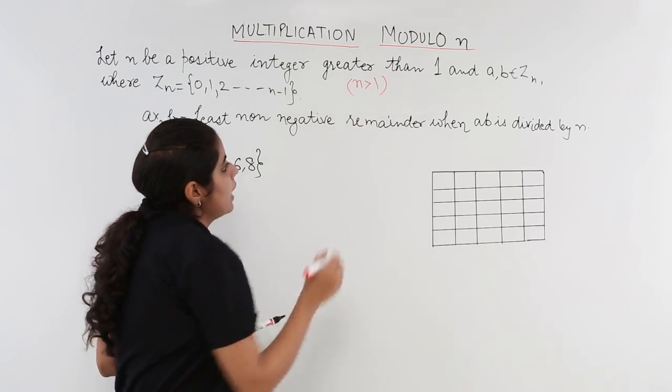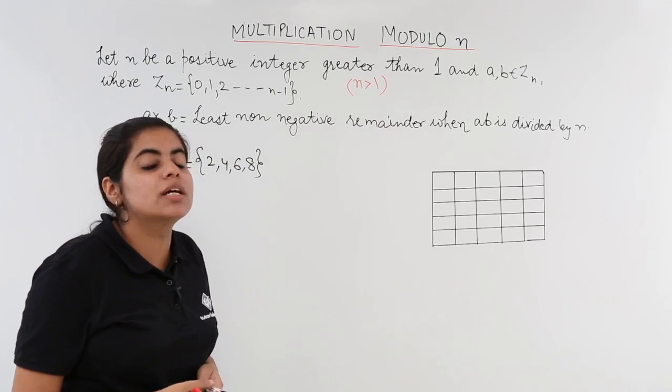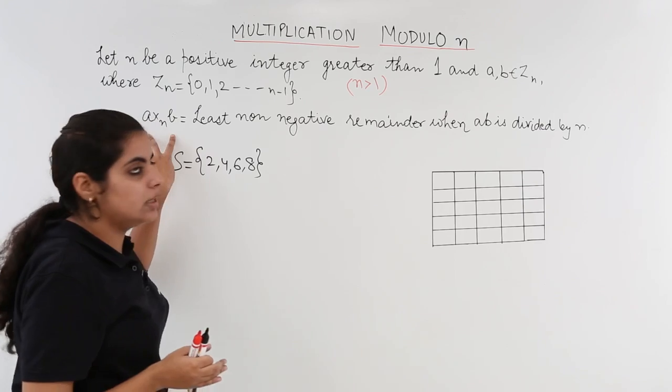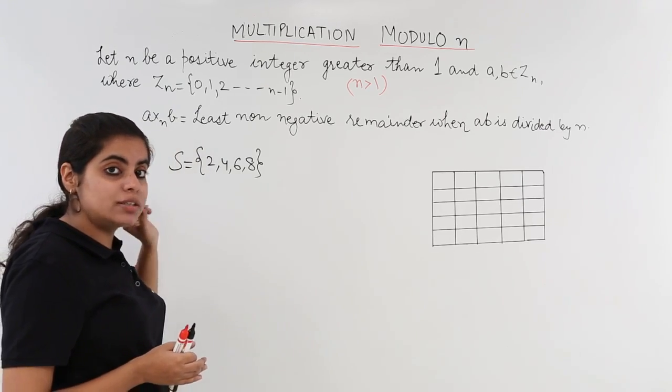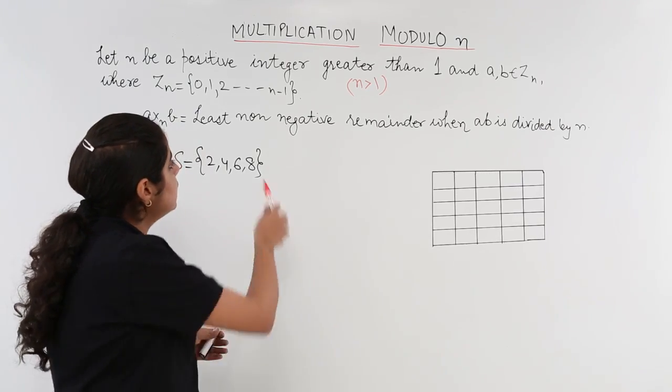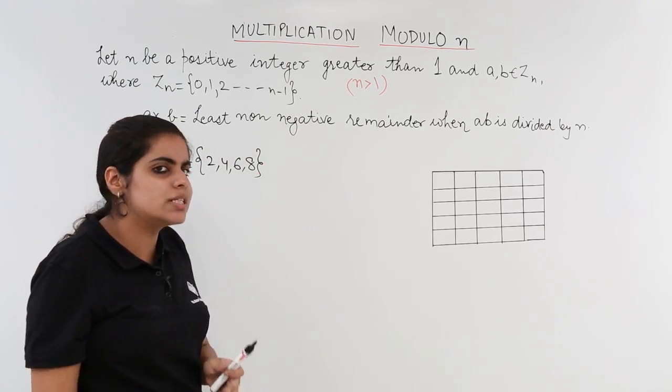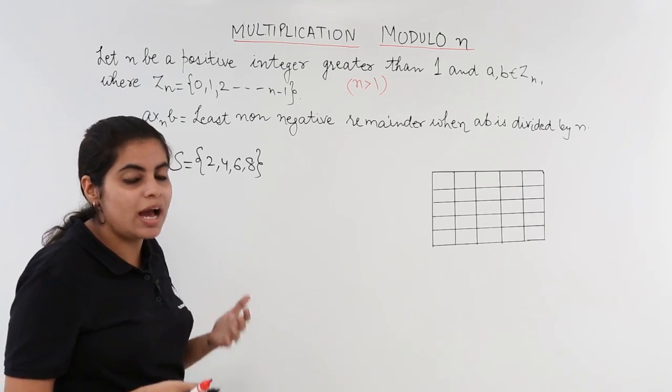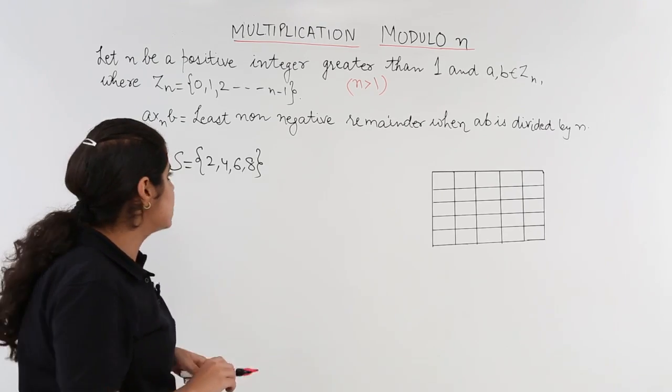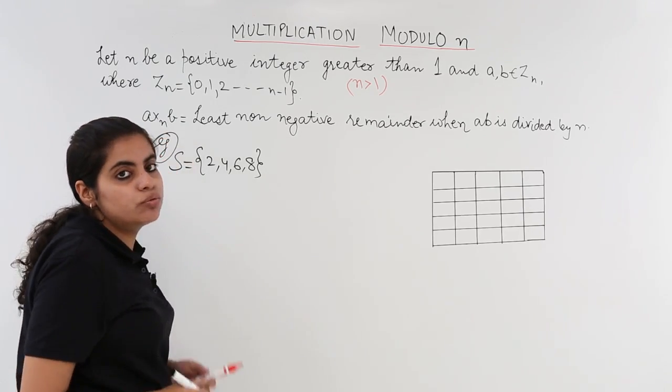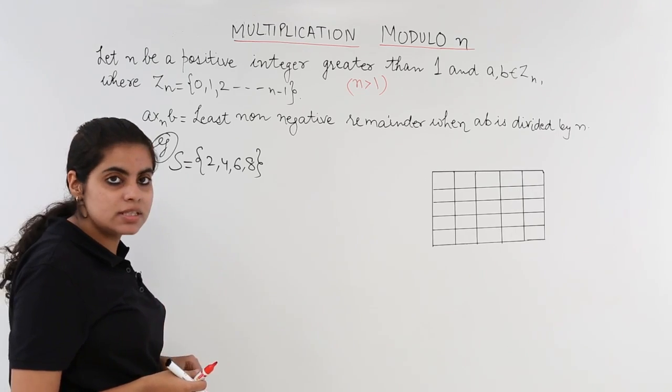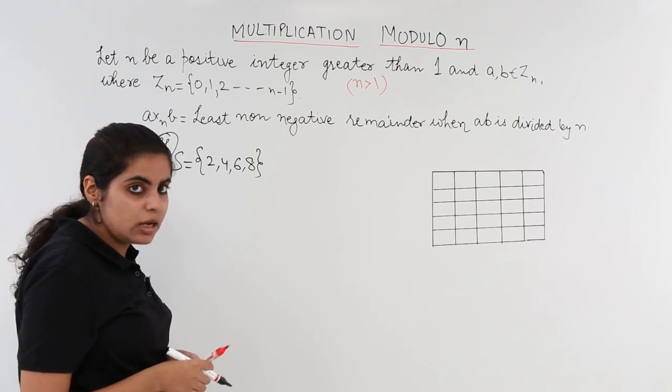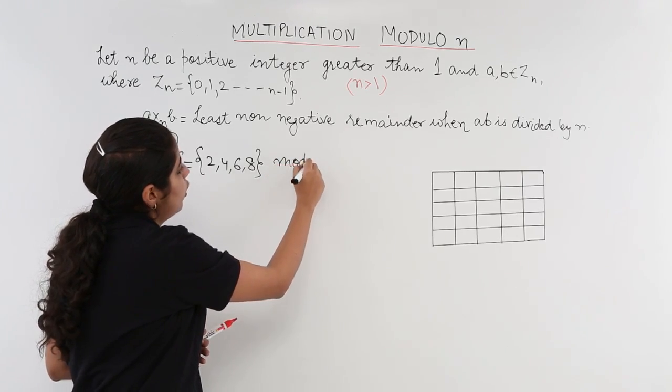There is also n greater than 1 which is given, and what we are supposed to do is we are supposed to product or multiply the elements a and b and then divide it by n so as to get the least non-negative remainder just as we did in the previous video. As we did in the previous video we also have one example for this video. The example is of a set S with 2, 4, 6, 8 as the four elements.